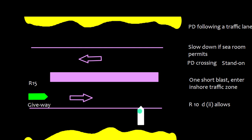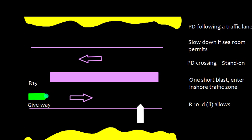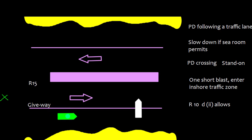If sea room permits and no vessel is close behind, slow down and allow the crossing vessel to pass. If slowing down is not possible, give one short blast, alter course to starboard, and enter the inshore traffic zone, as Rule 10D allows entry into the inshore traffic zone to avoid danger.